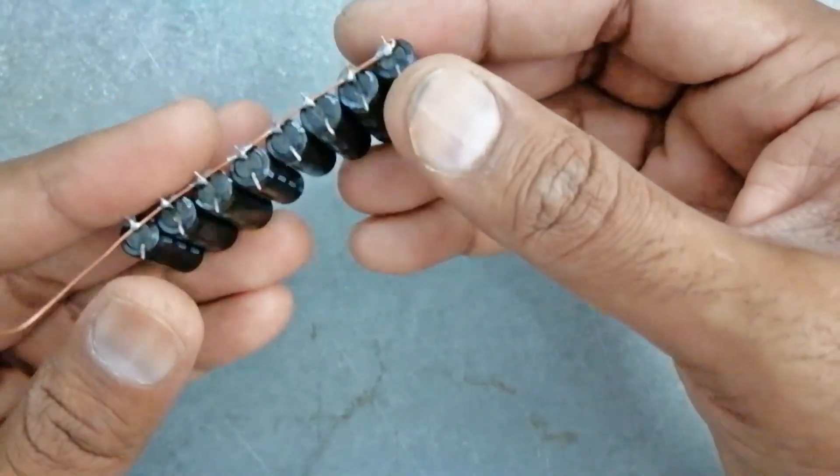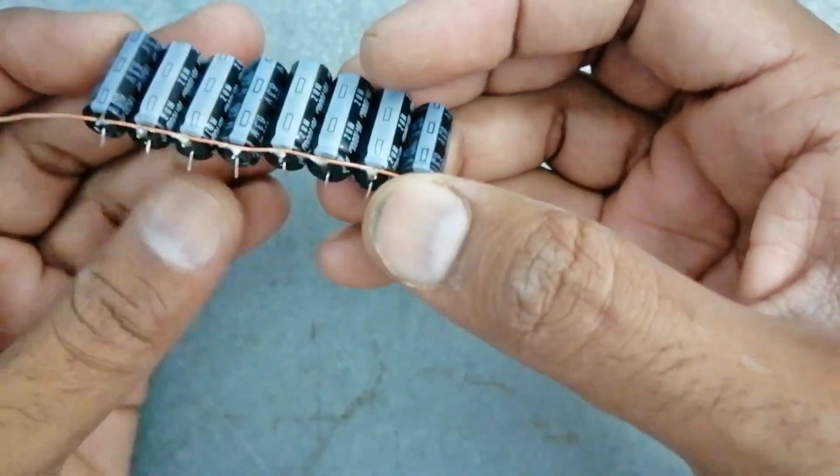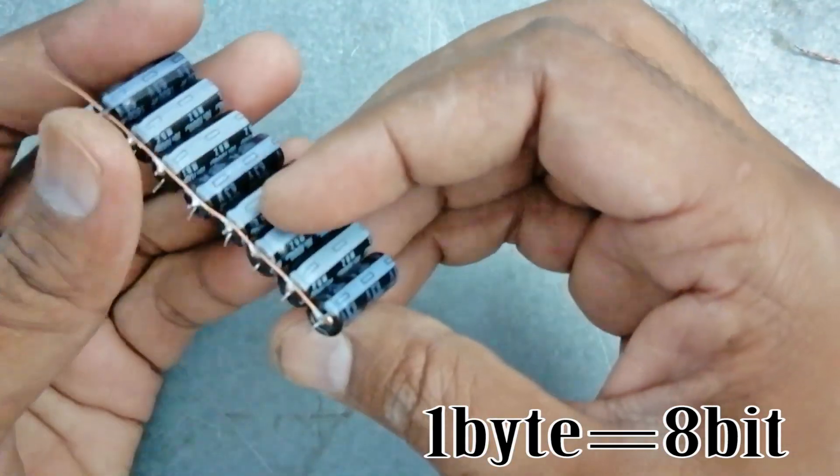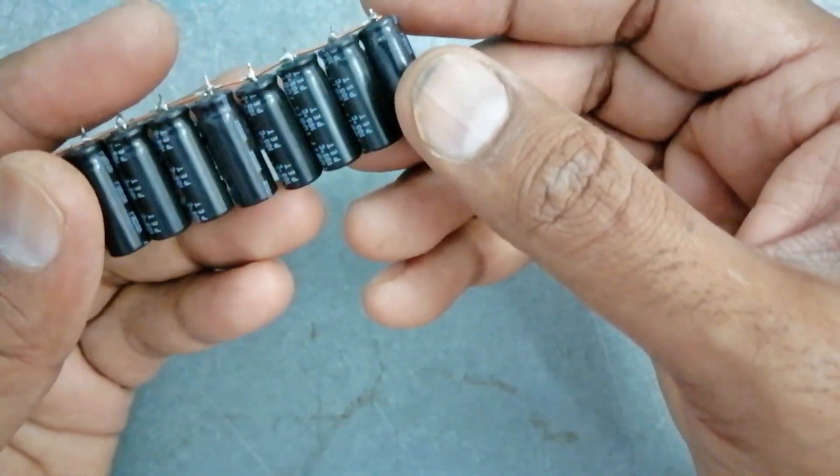We have prepared one byte memory with eight capacitors. You know that one byte consists of eight bits. You know that a bit is a value of zero or one that every capacitor can save.